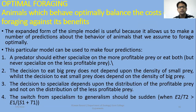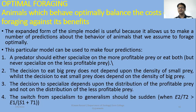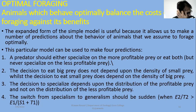The expanded form of this simple model is useful because it allows us to make a number of predictions about the behavior of animals. Four predictions are given. First, according to the model, a predator should either specialize on the more profitable prey or eat both, but never specialize on the less profitable prey alone, because smaller prey does not provide sufficient energy.